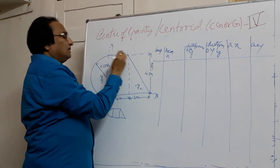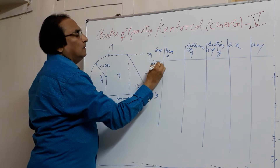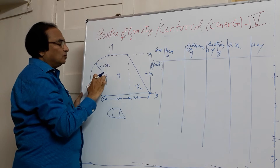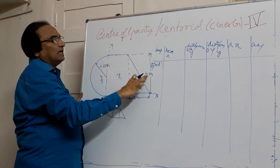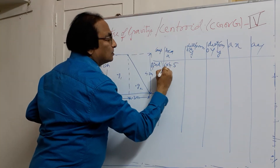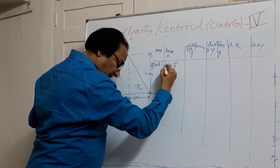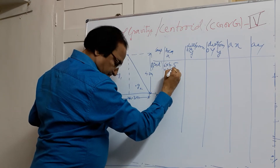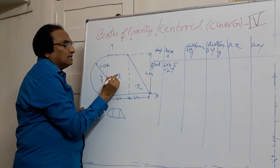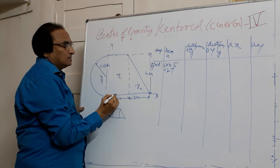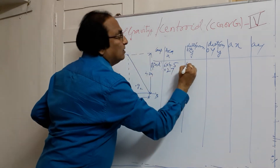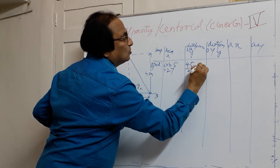We'll begin with G1, which is a rectangle of size 6 by 4.5, giving an area of 27 mm². The centroid is at the center, so the distance from OX (Y-distance) is half of 4.5, which equals 2.25. So 4.5 divided by 2 equals 2.25.